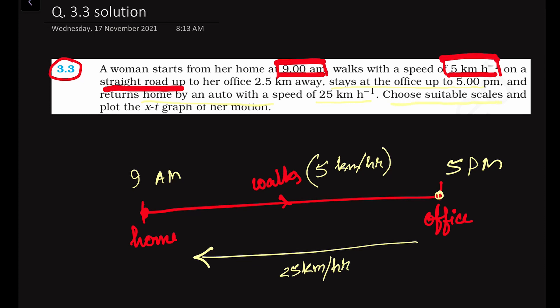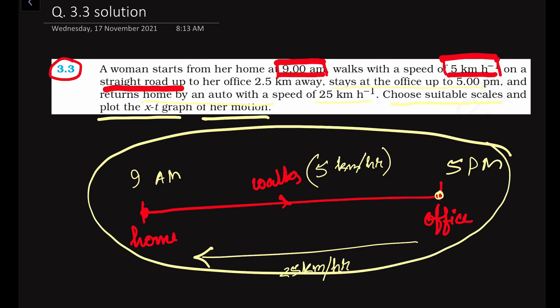We have to choose suitable scales and plot the XT graph of her motion. We have to consider proper scales and then see how the position of the woman is changing over time. So we have to plot this graph.